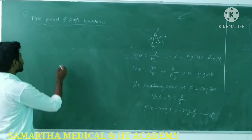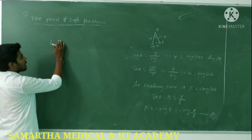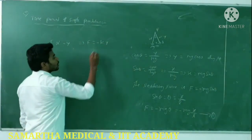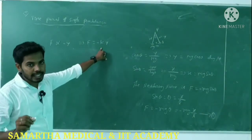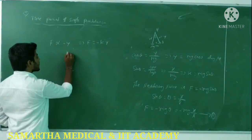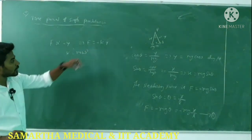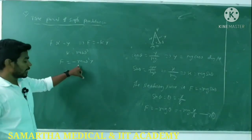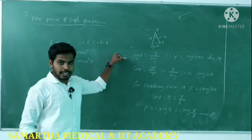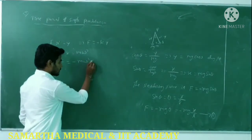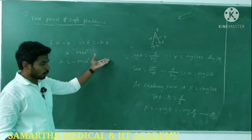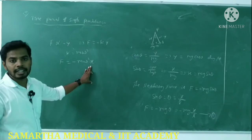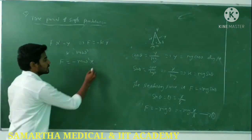The restoring force in simple harmonic motion is F = -Ky, where K is the proportionality constant. Since K = mω², we get F = -mω²x. This is equation number 2. Comparing equation 1 (F = -Mg·x/L) and equation 2 (F = -mω²x), we find ω² = g/L.